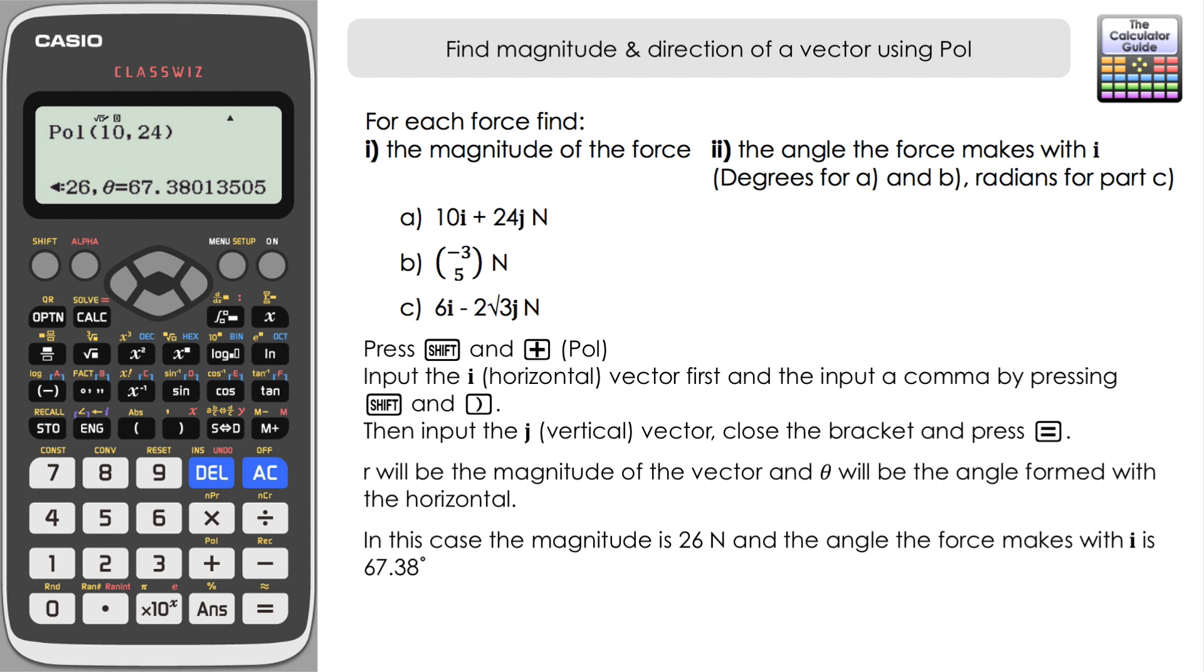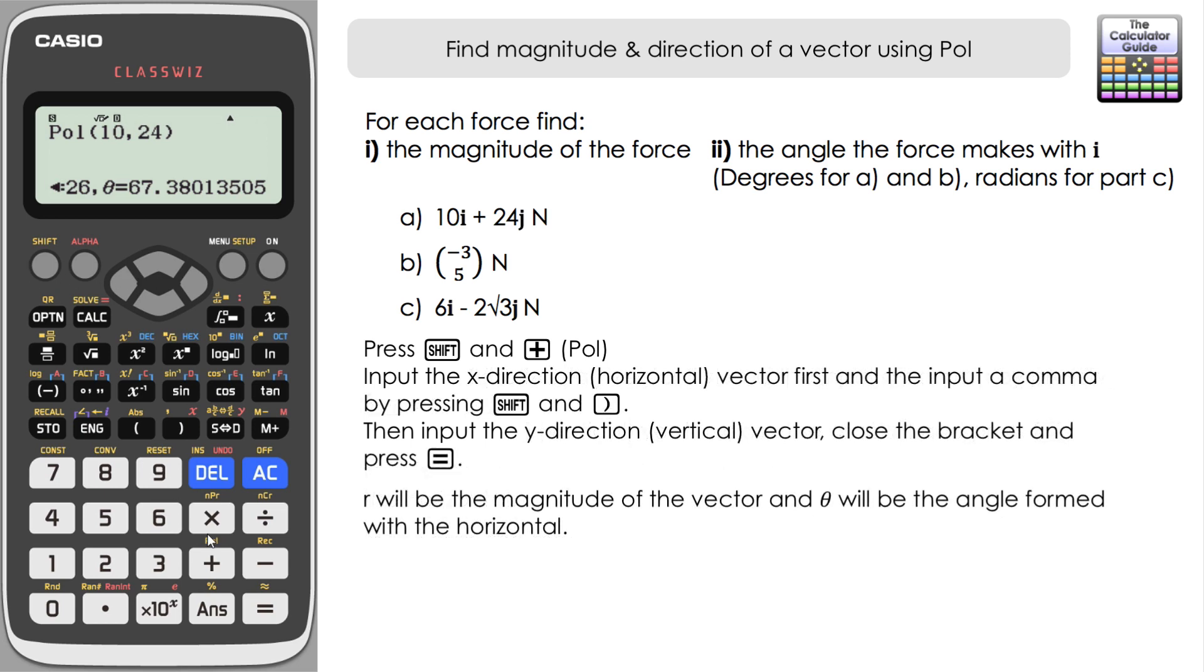Let's try that again with the second example. This time we've got a column vector here minus three five but we're going to input it horizontally so shift pole to activate the pole feature. X direction vector is negative three, minus three, let's input that and then comma, shift comma, and then the vertical vector, the y direction vector is five, close the brackets and press equals.